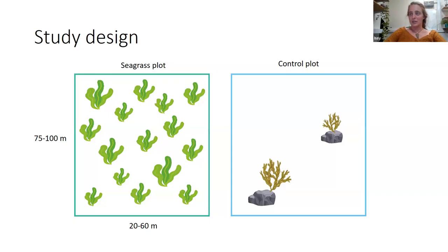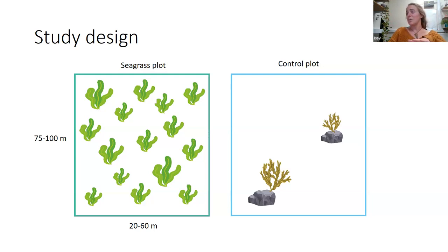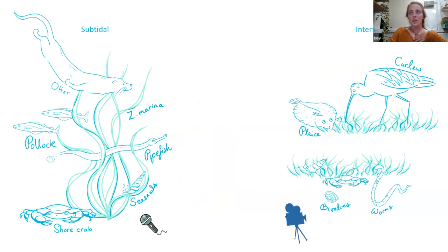Here's a simple overview of my study design at each site. I had a seagrass plot and a control plot which had to be the same size at each site, though they varied in size between sites. The control plot needed to be as similar as possible in terms of depth, sediment type, and distance from the shore. Where you put your control site can really change your results, so it's quite a crucial factor I'll have to think about carefully in my analysis.